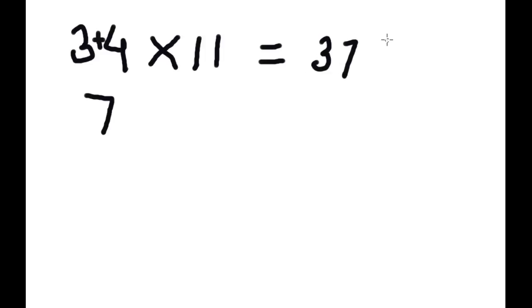Let's start with the first example: 34 into 11. We will first add 3 and 4. The addition of 3 and 4 is 7. The solution of 34 into 11 is 374. We put the 7 in between 3 and 4, so the solution of 34 into 11 is 374.